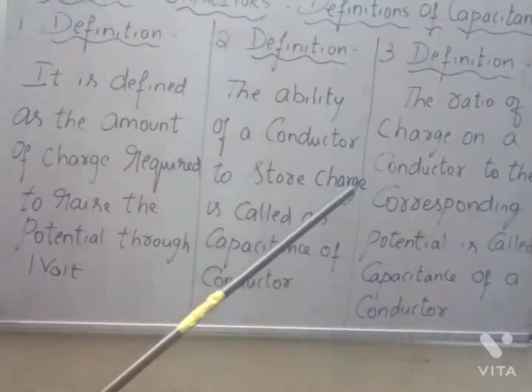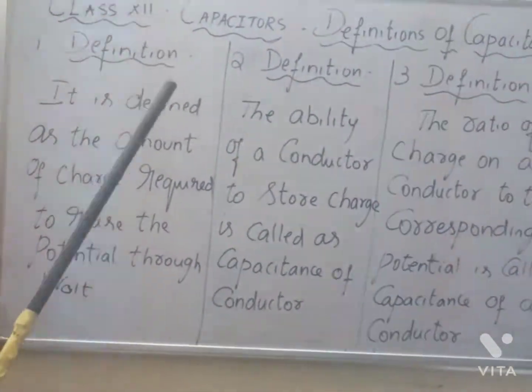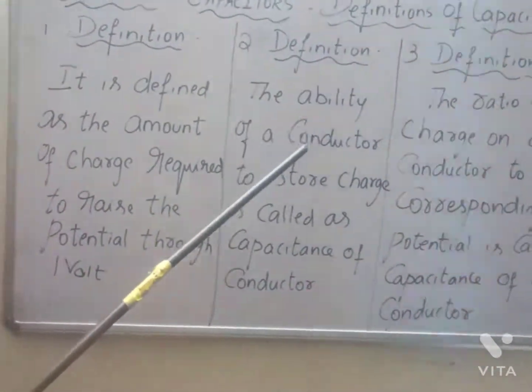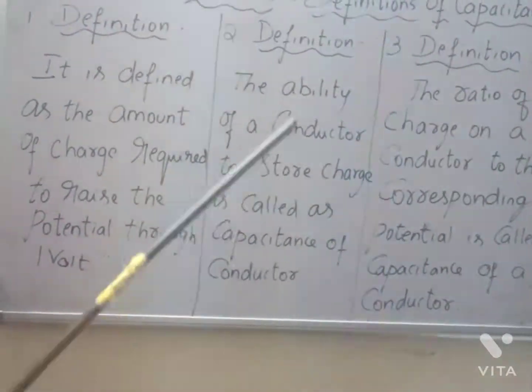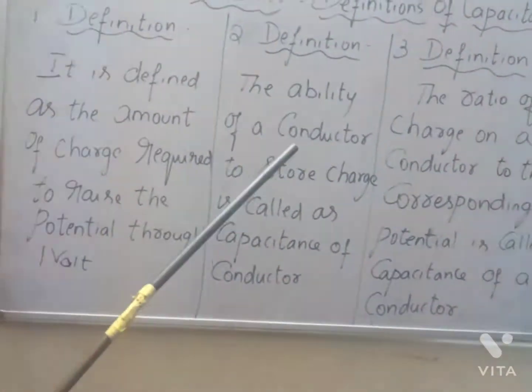The ability of a conductor to store charge is called capacitance of a conductor. A capacitor is a charge storing device, so capacitance is the ability of a conductor to store charge.